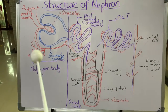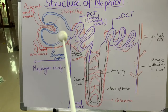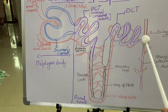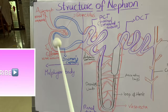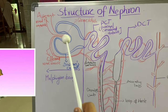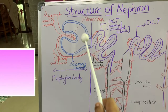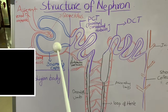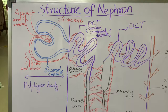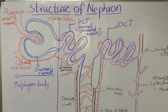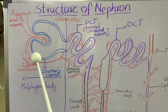Each nephron is divided into two parts: the Malpighian body and the renal tubule. The Malpighian body consists of two parts — Bowman's capsule and glomerulus. The red one is the glomerulus, and this blue cup-like structure is known as Bowman's capsule. Bowman's capsule was first described by scientist William Bowman, which is why it bears his name.